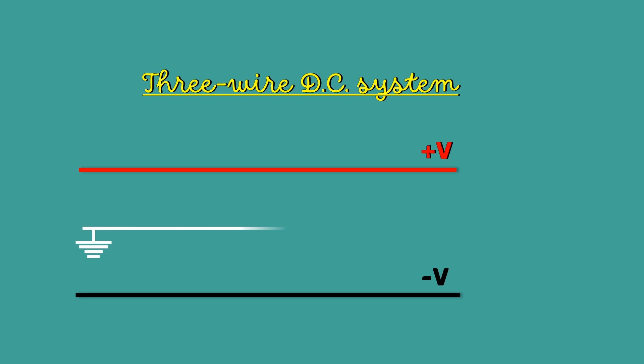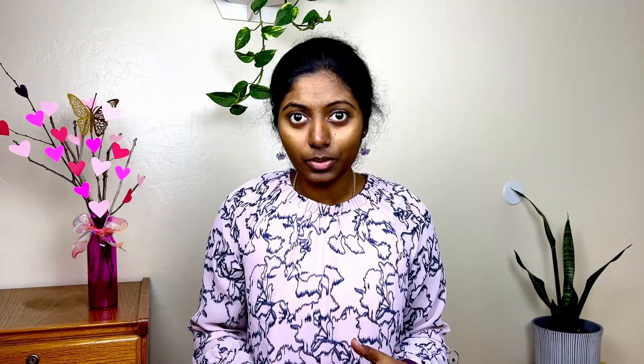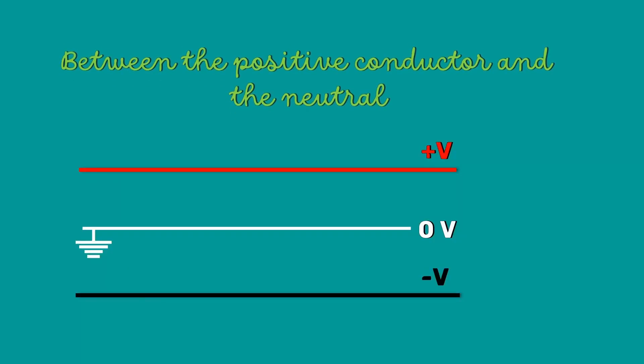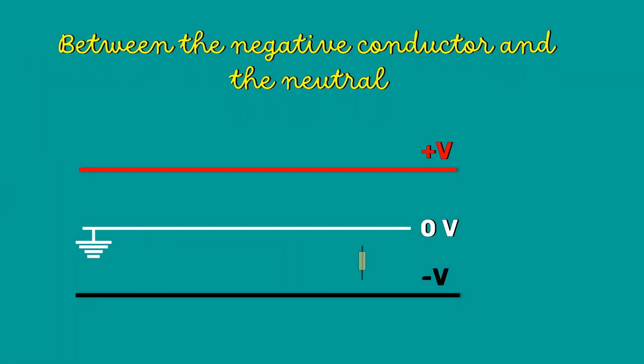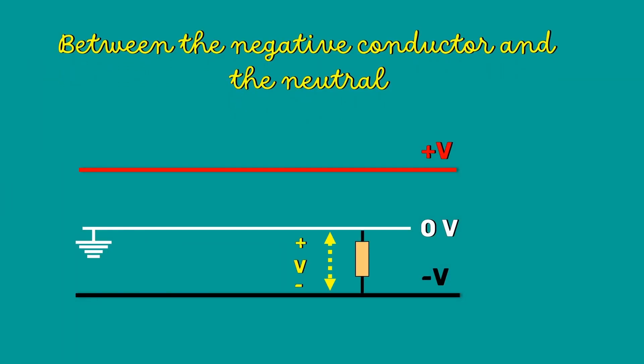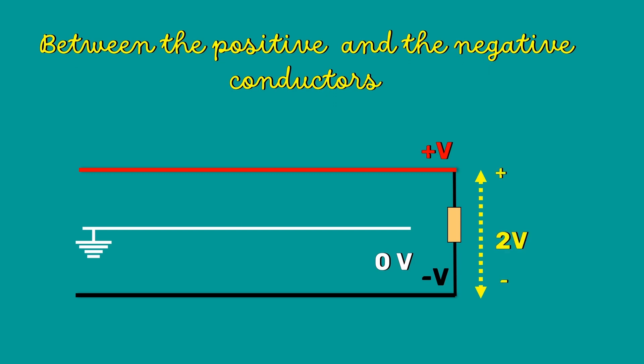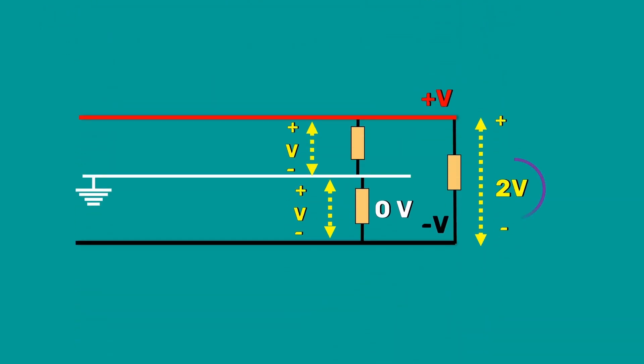It consists of two outers and a middle or neutral wire which is earthed. There are three possibilities to connect the load.